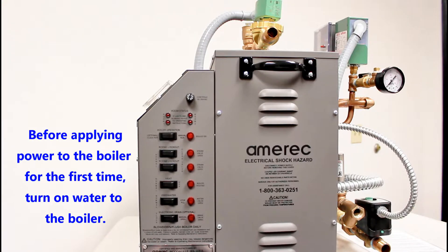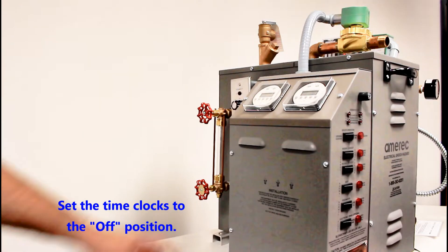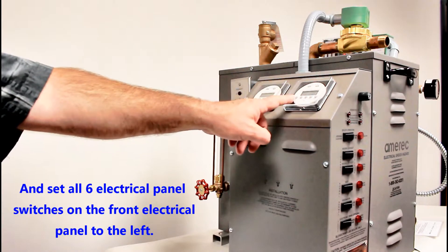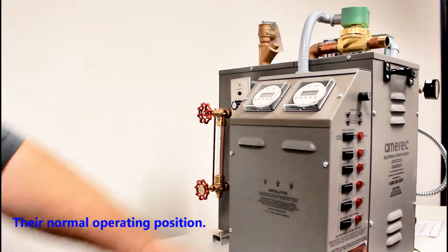Before applying power to the boiler for the first time, turn on water supply to the boiler. Set the time clocks to the off position and set all six rocker switches on the front electrical panel to the left, their normal operating position.